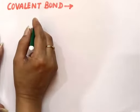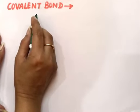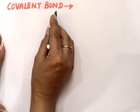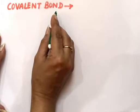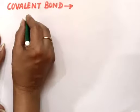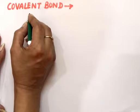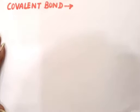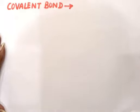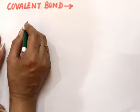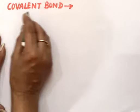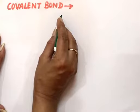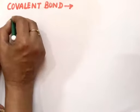We are doing the topic chemical bonding. In chemical bonding we have covered ionic bond formation, now we are doing covalent bond formation. Ionic bond forms between a metal and a nonmetal while covalent bond forms between nonmetal atoms, because metals lose electrons and nonmetals gain electrons. When two nonmetal atoms are present, both need electrons, so they form a covalent bond in which mutual sharing of electrons takes place.